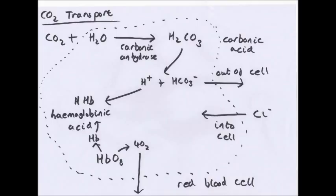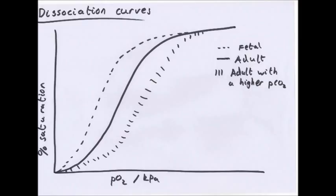Dissociation curves show how saturated haemoglobin is with oxygen at any given partial pressure of oxygen. The graph is S-shaped because when haemoglobin combines with the first oxygen molecule, its shape alters in a way that makes it easier to accept more oxygen. The next two oxygen molecules join quite easily, but then the shape changes again making it slightly harder to add the fourth molecule — hence the curve levels off at the end.